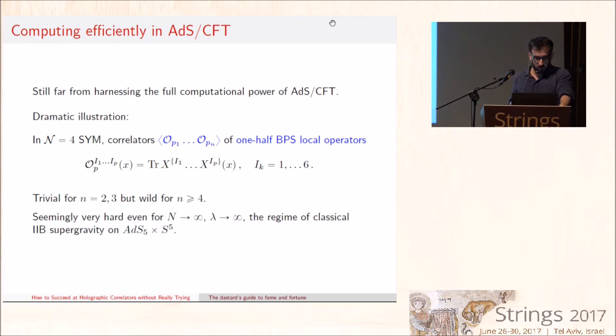A dramatic illustration of this fact is a class of observables which are sort of the first that were originally computed, and we are still struggling very much to compute them, which is correlation functions of local operators in the paradigmatic example of N=4 super Yang-Mills and Type IIB string theory. These are the familiar 1/2 BPS operators, local operators obtained by taking the symmetric trace of combinations of the SO(6) indices, where X are the six fundamental scalars of N=4 super Yang-Mills.